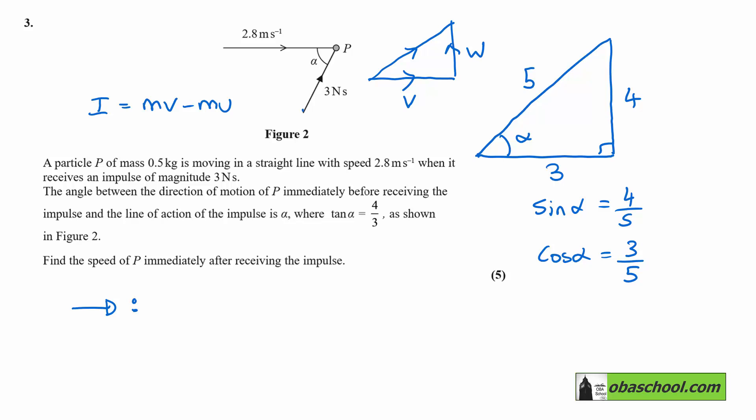If we go to the diagram up here and split the impulse into components, which will be this way and this way, the top one here will be the cosine. So it's going to be 3 times cos alpha, so that would be 9/5. And in the other direction we're going to have 3 times sine alpha, so that would be 12/5.